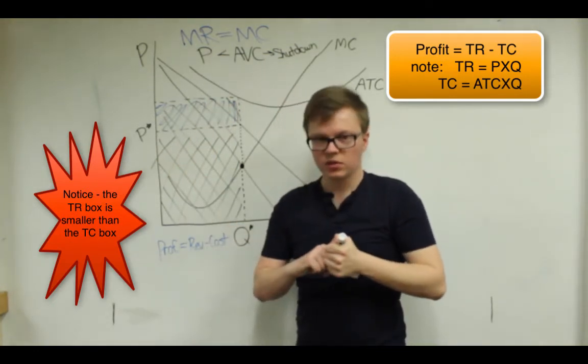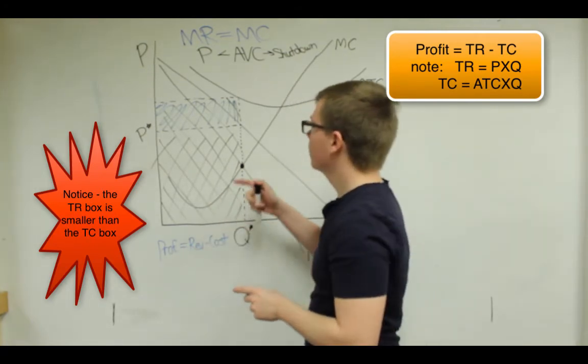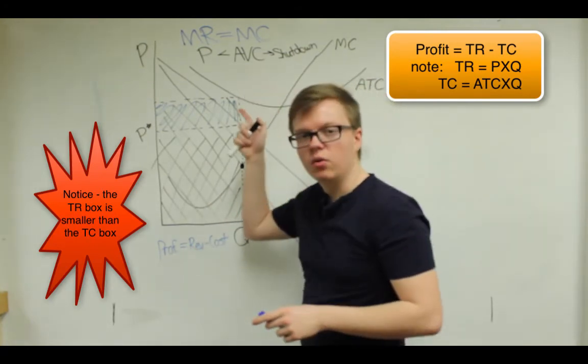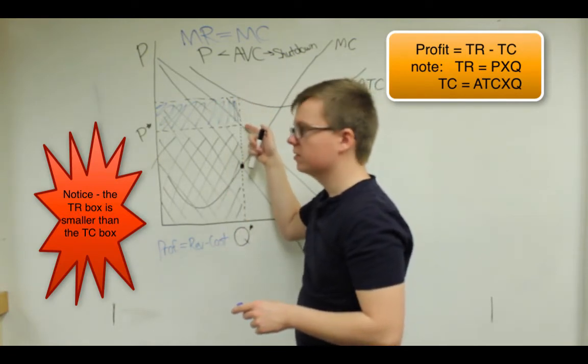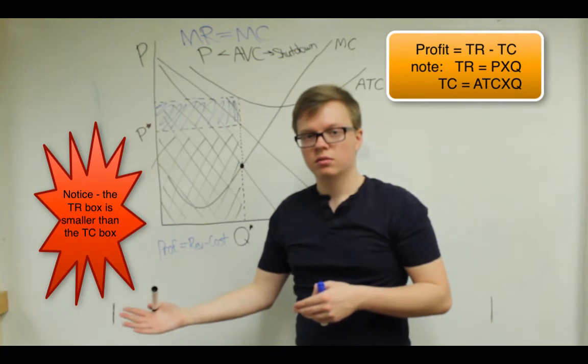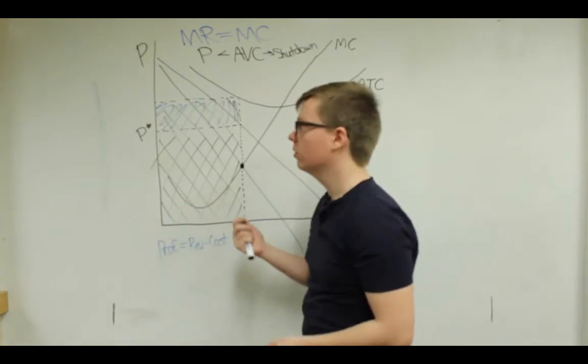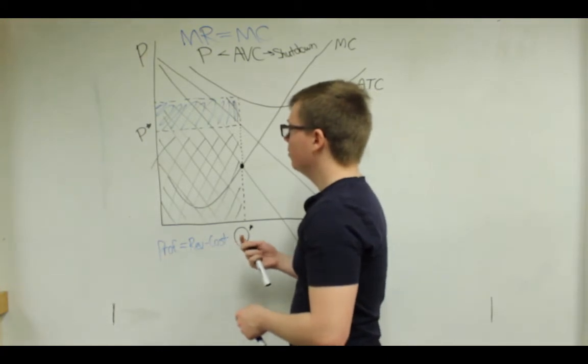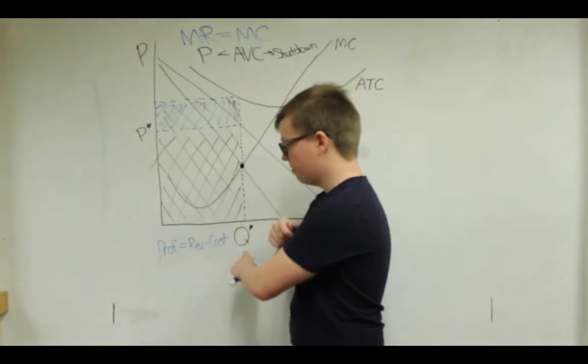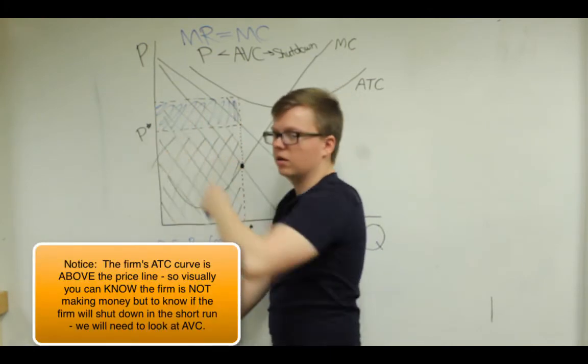And then so that's either their profit or their loss. The way to tell which it is is that because their average total cost is above the price they're selling it for, they're losing money with each unit they produce. It costs them more than they can sell it for. And because they're doing that for this many units, their loss is this entire rectangle.